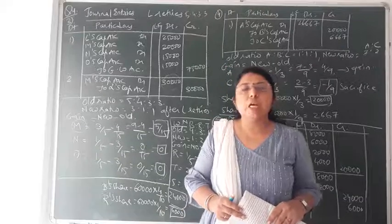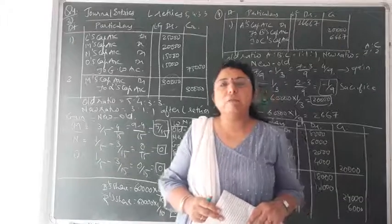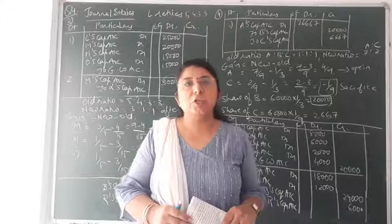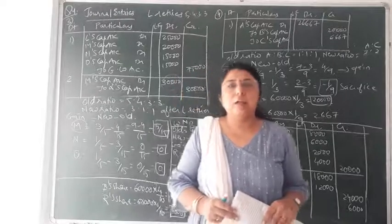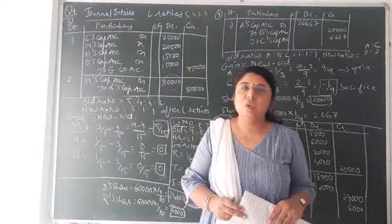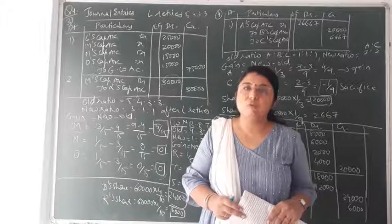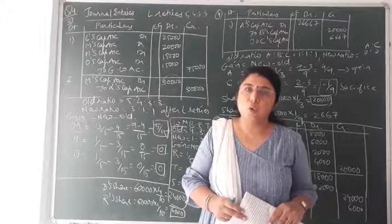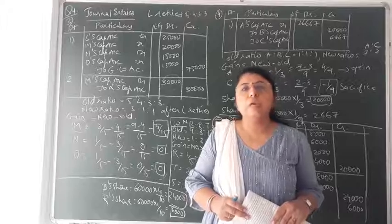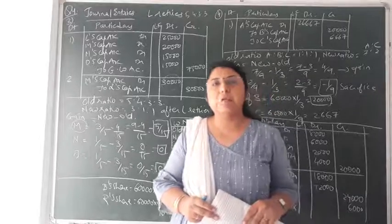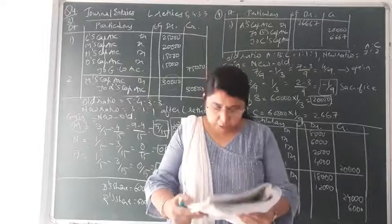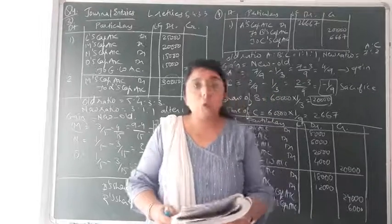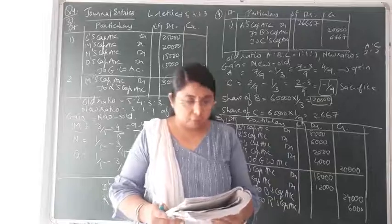There are a few sums in your textbook — question number 4. I will be doing the third, fourth and fifth sum of question number 4. So first of all let us read question number 3 of your textbook, that is on page number 265.